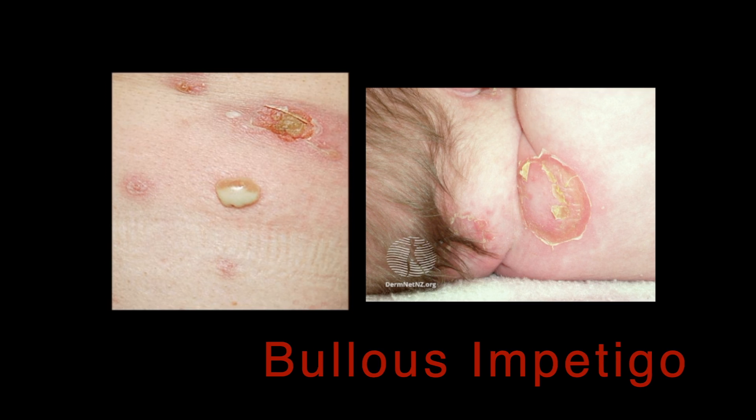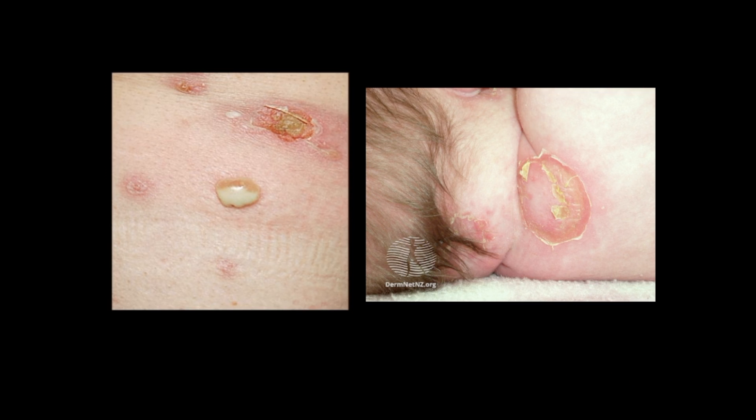Bullous impetigo is a bacterial skin infection caused by Staphylococcus aureus that results in the formation of large blisters called bullae, as you can see here. These are usually found in areas with skin folds, such as the armpit, the groin, between the fingers or toes, beneath the breast, or between the buttocks.